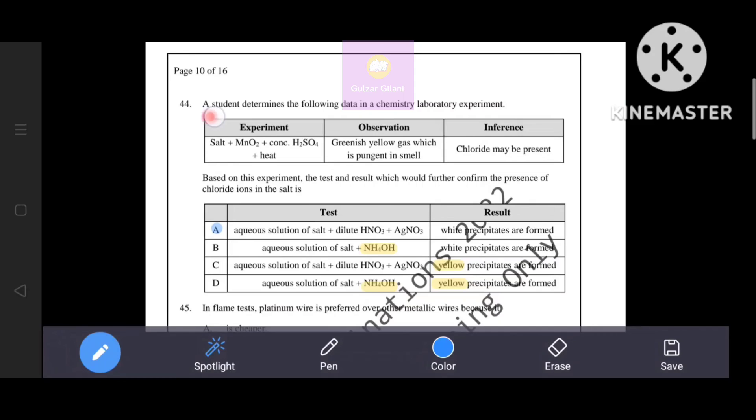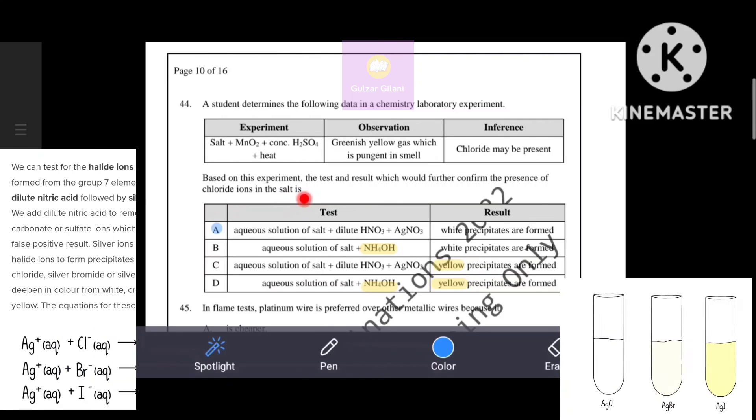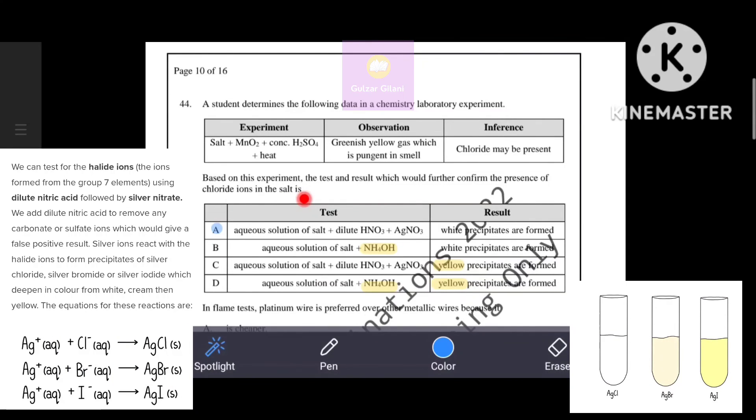Next question. A student determines the following data in a chemistry laboratory experiment: salt plus MnO2 plus concentrated sulfuric acid plus heat. Observation: greenish yellow gas which is pungent in smell. Inference: chloride may be present. Based on this experiment, the test and result which would further confirm the presence of chloride ions in the salt is... We can test for halide ions using dilute nitric acid followed by silver nitrate.